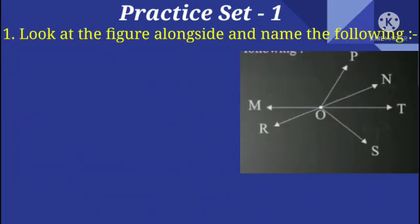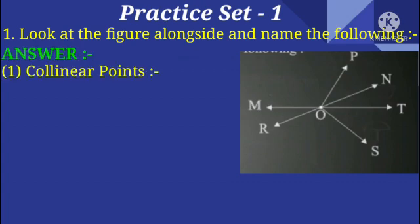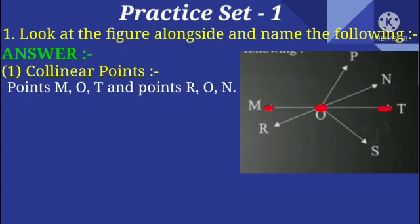Practice Set 1, Question Number 1: Observe the figure and name the following. First, Collinear Points. Let's learn about collinear points. What are collinear points? Three or more points which lie on the same line are said to be collinear points. Now look at the figure. Points M, O, T and points R, O, N are collinear points.